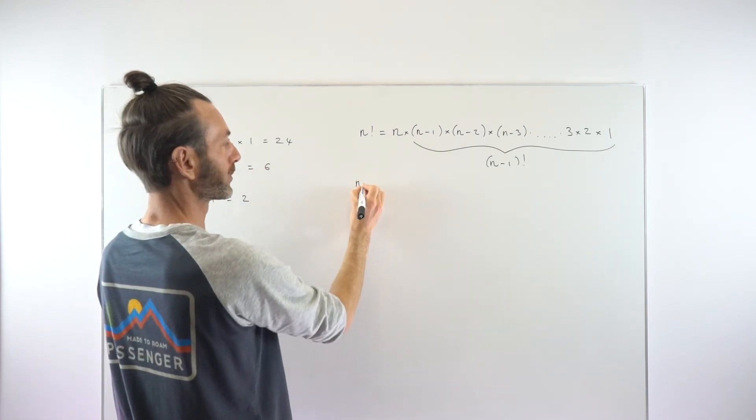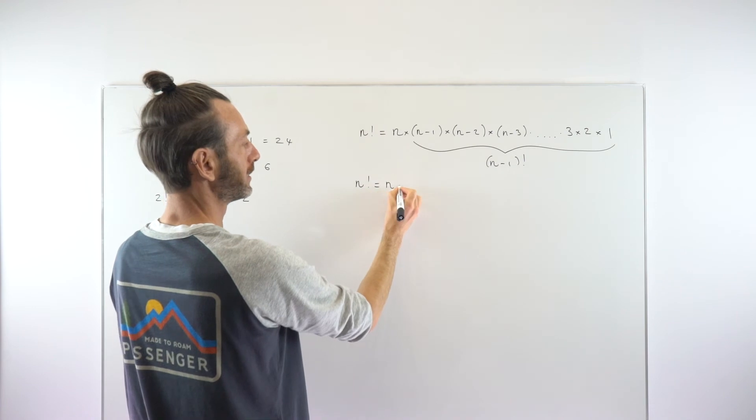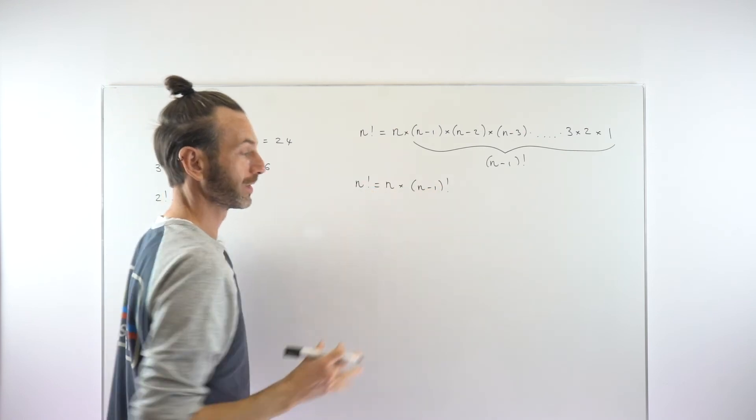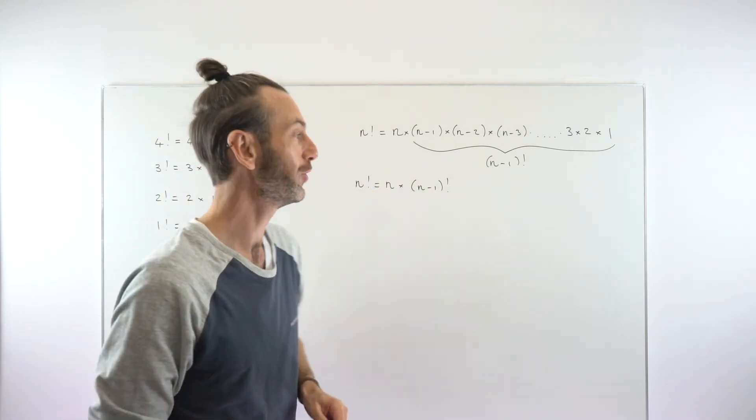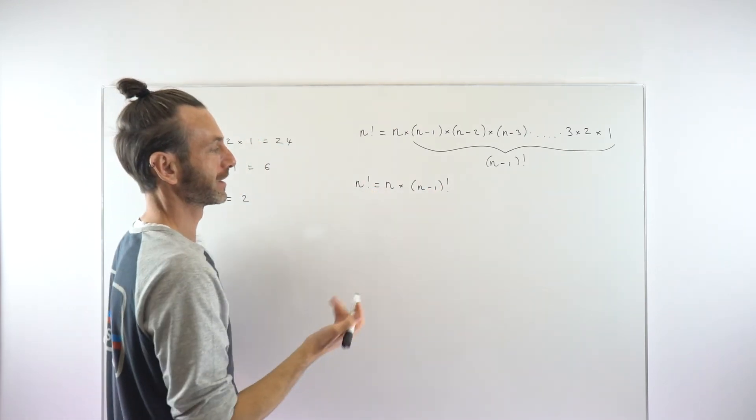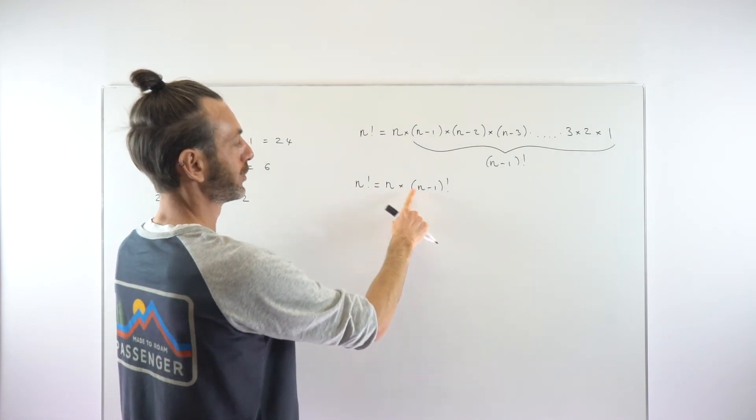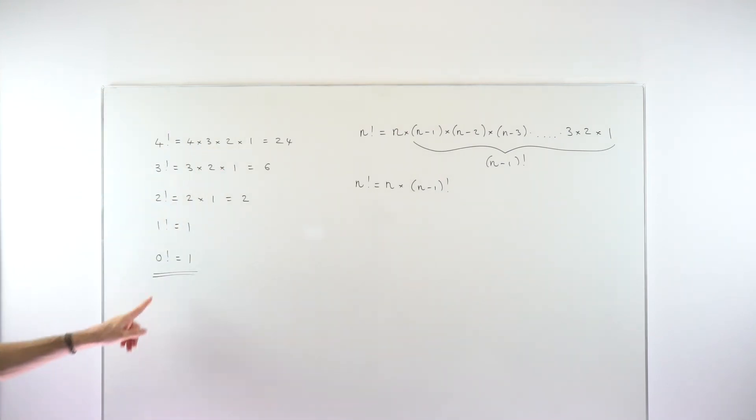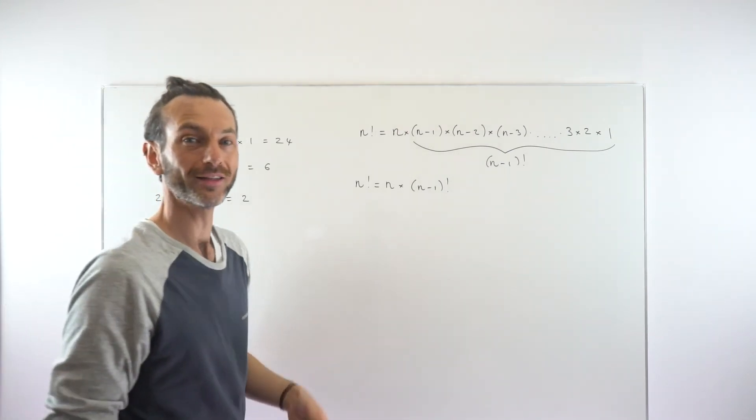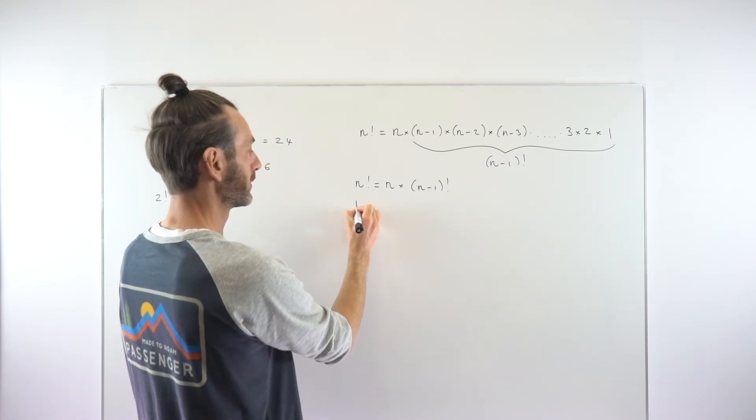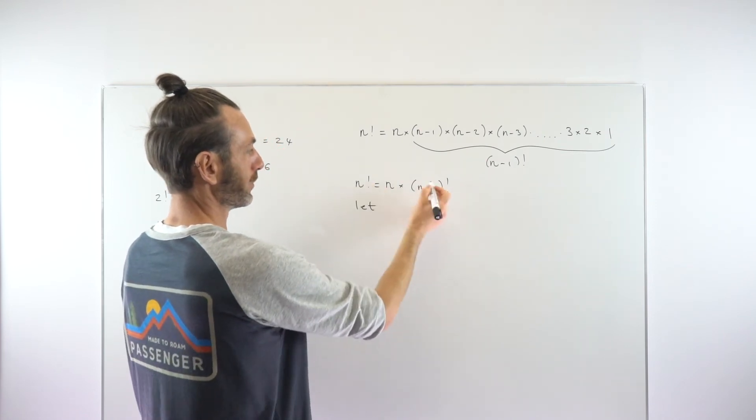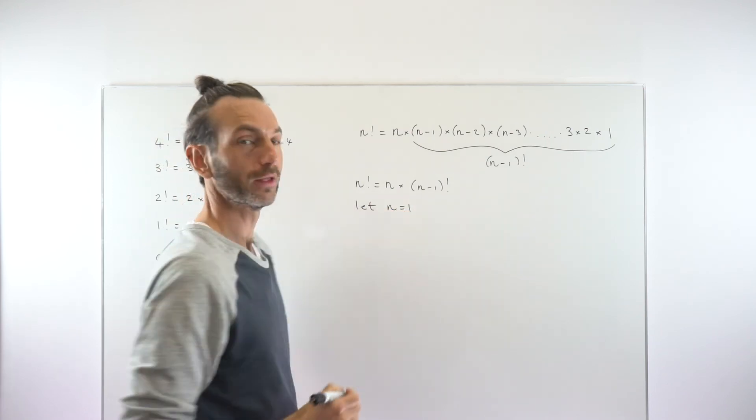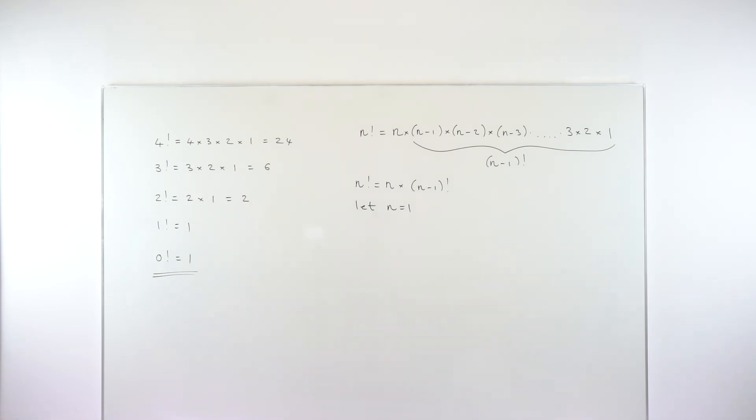So in other words, n factorial, what we started with, is equal to n times n minus 1 factorial. So this gives us a little formula, essentially, or an identity, you might call it. An identity is kind of like a formula. And it allows us, therefore, to choose any n value that we want. Now, for our result, which is to work with 0 factorial, it's going to be convenient to let n equal 1. So let's just do that. Remember, in this sort of identity expression, you can let your n value be anything you want. So let's let our n equal 1.